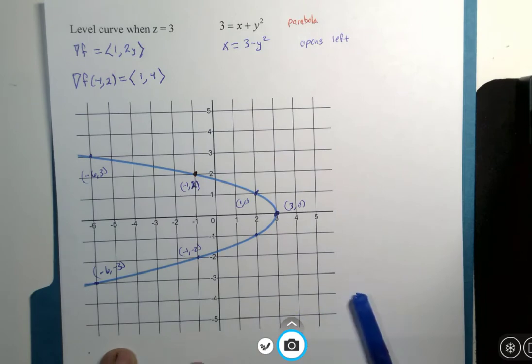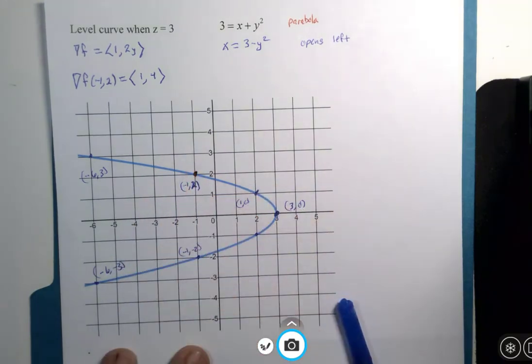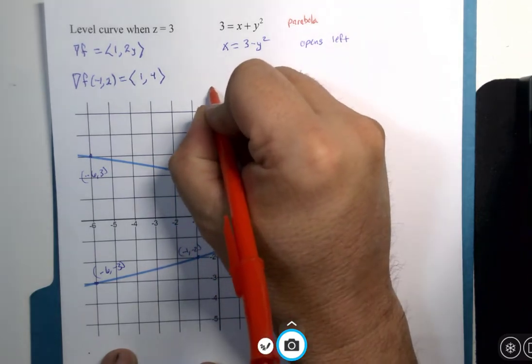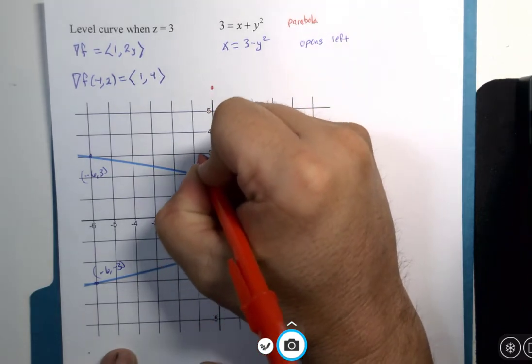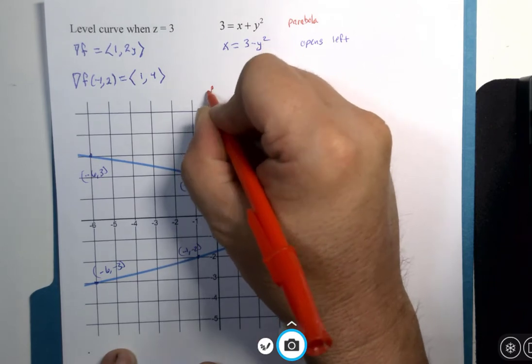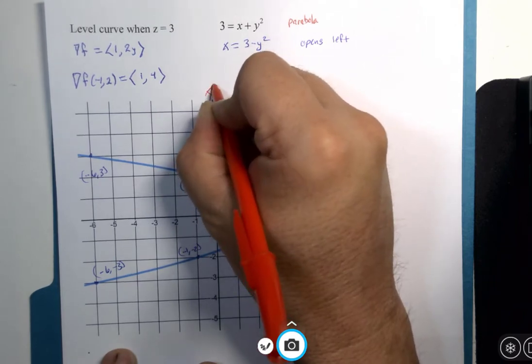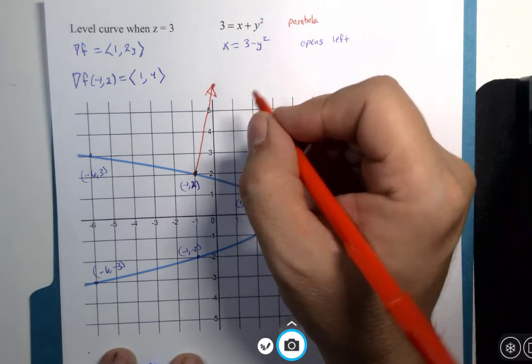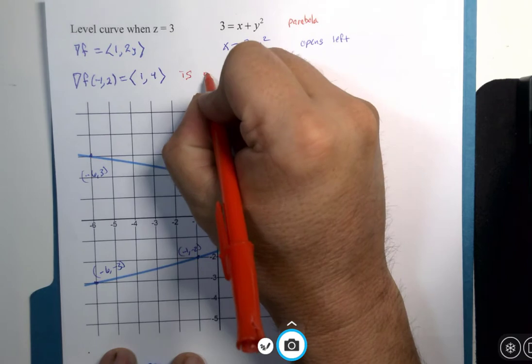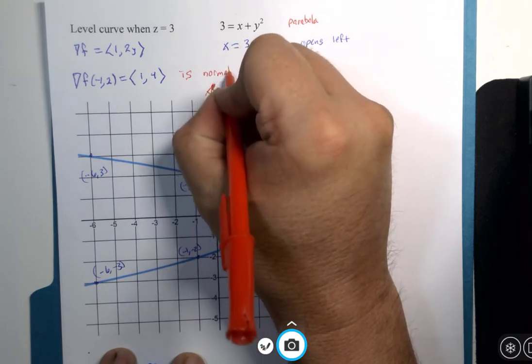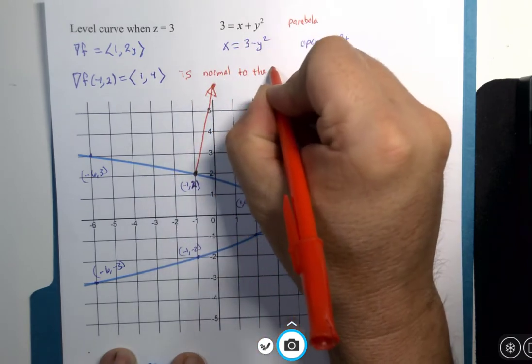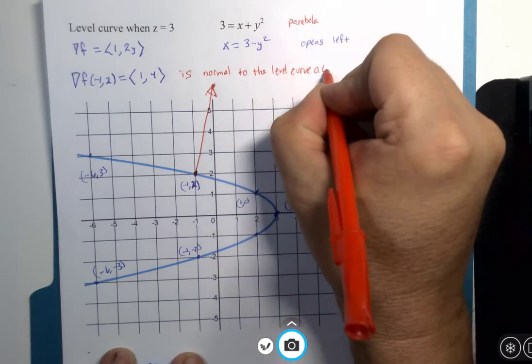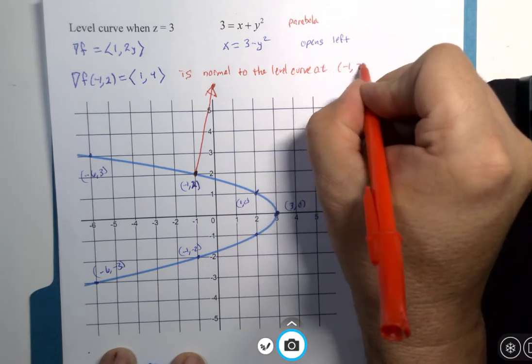And if I were to start here at this point and draw that vector over 1, up 4, this vector has that direction and that exact magnitude is normal to the curve, is normal to the level curve at the point negative 1, 2.